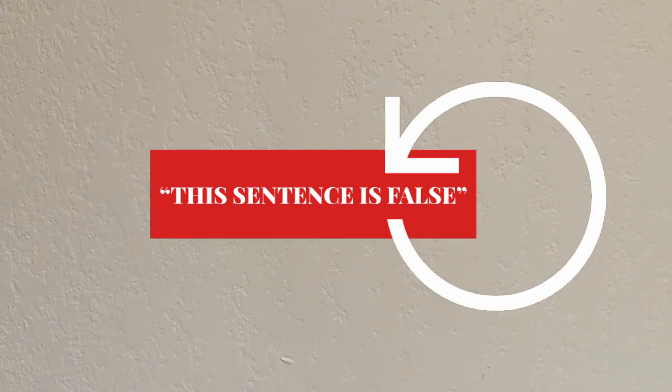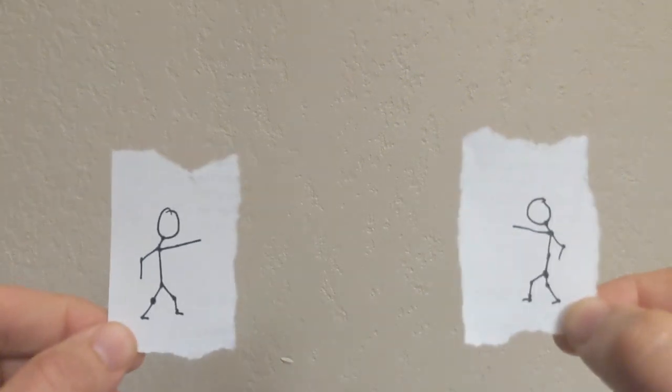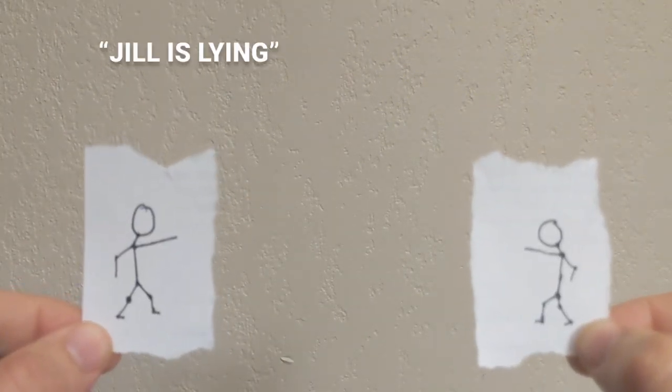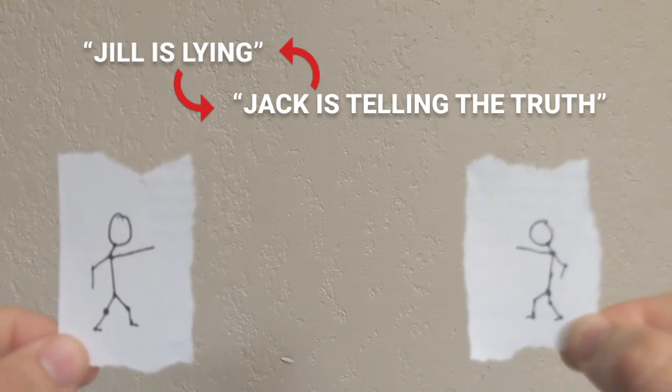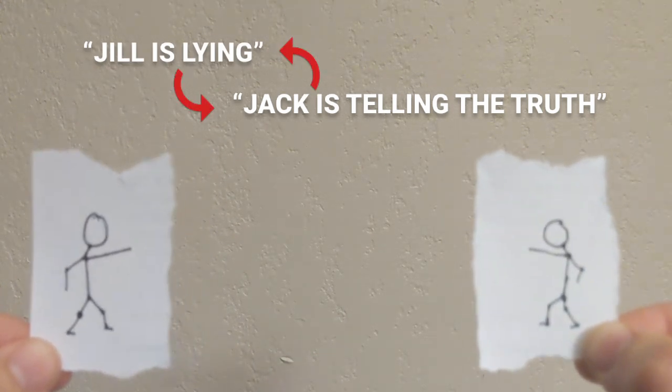Another way to get rid of self-reference is to add a second sentence into the equation. Two children pointing at each other. Jill is lying! Jack is telling the truth! With the two children talking about each other, we can see that there is no self-reference here,